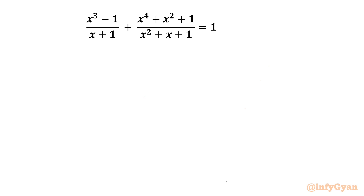Welcome back to Infigyan, my dear friends. Today in this video we are going to take up one very interesting and challenging rational equation problem. The equation is x³ - 1 over x + 1, plus x⁴ + x² + 1 over x² + x + 1, equal to 1. We have to find out all possible solutions.